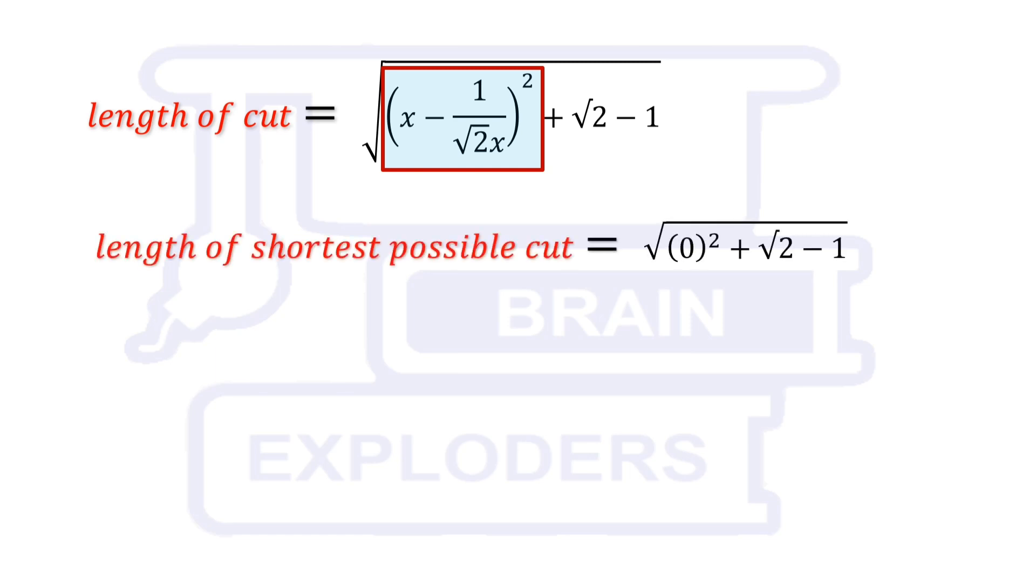We find that length of shortest possible cut is square root of root 2 minus 1 units. This is less than previous case also and therefore, this is the required length.